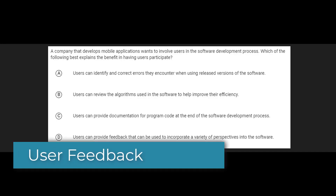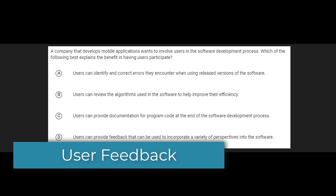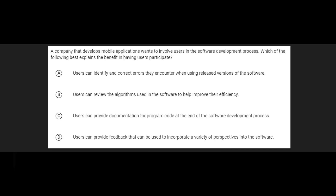The next couple of problems are going to be about the development process. Now a lot of these questions seem pretty obvious to some people — they might come across as kind of the common sense part of the exam. However, there are a lot of little things that you might disregard as not being important that cause a lot of people to actually miss these questions and get them wrong. Here's a good starting example to prove that point — this is actually a question I've put in a quiz in the past and a lot of people got it wrong because they underestimate how important this factor is.